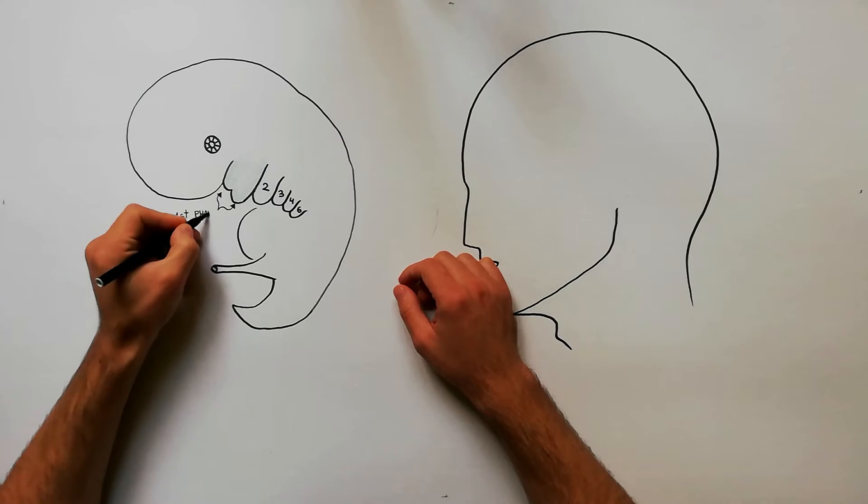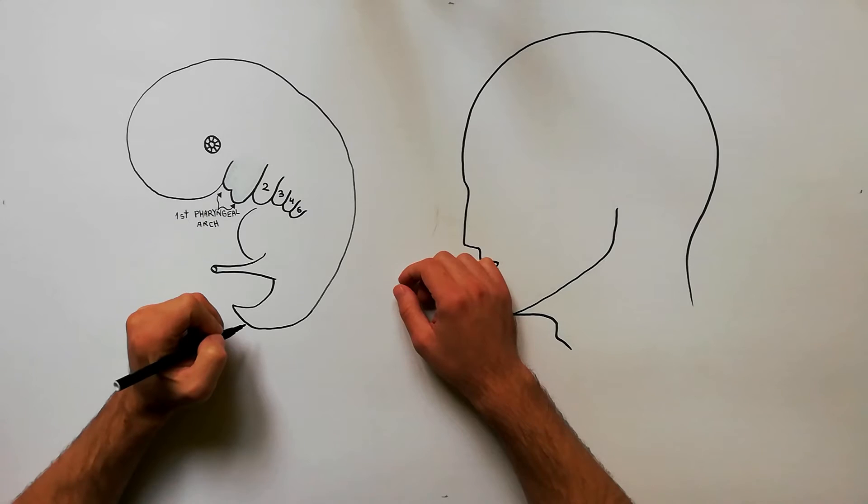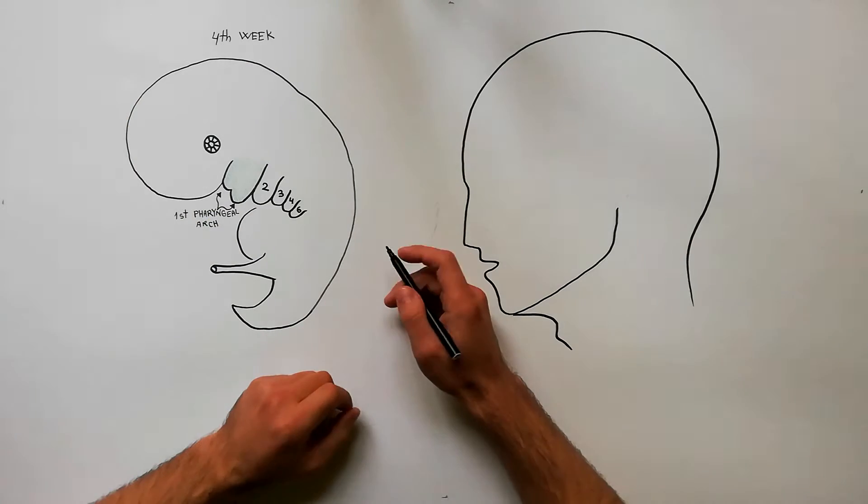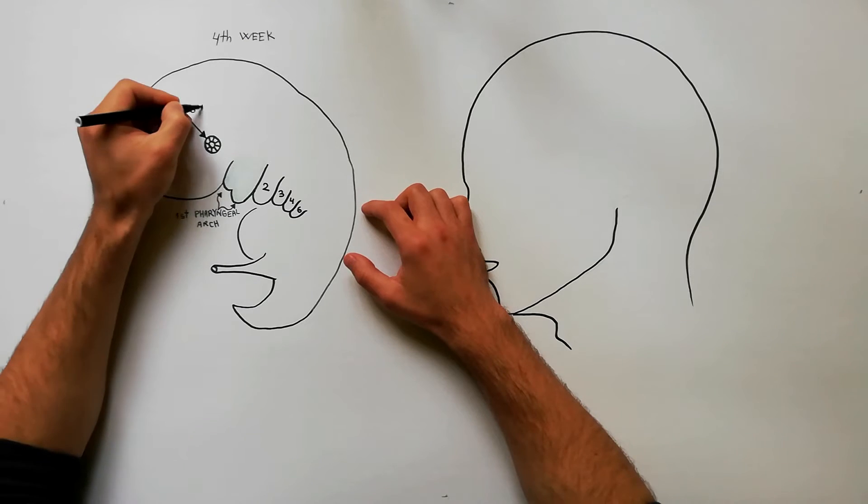The first pharyngeal arch is the first of six pharyngeal arches that develops during the fourth week of development. It is located distally to the lens placode.